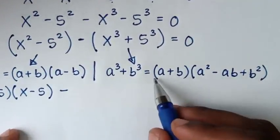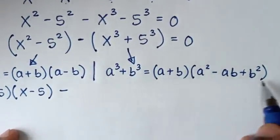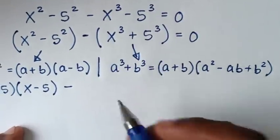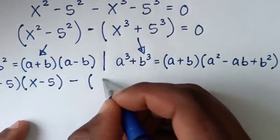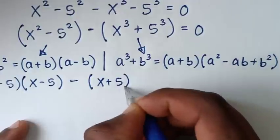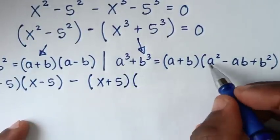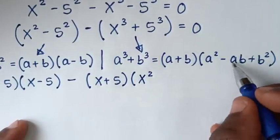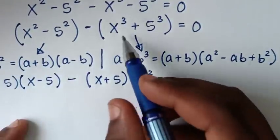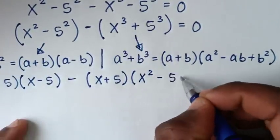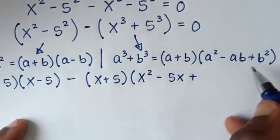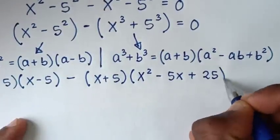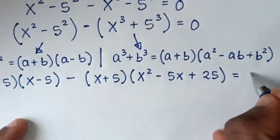So we'll apply, from this rule, the form: a plus b gives x plus 5, then a squared gives x squared, then minus ab gives minus x times 5, which is 5x, then plus b squared gives 5 squared, which is 25, is equal to 0.